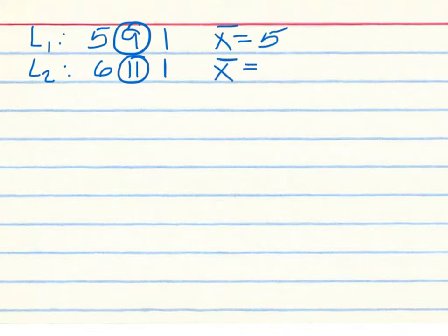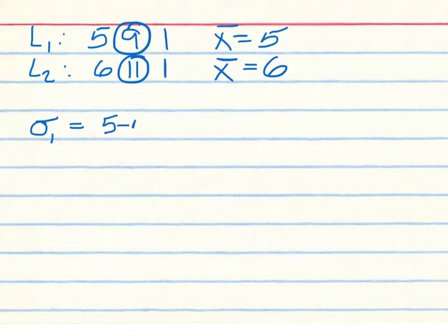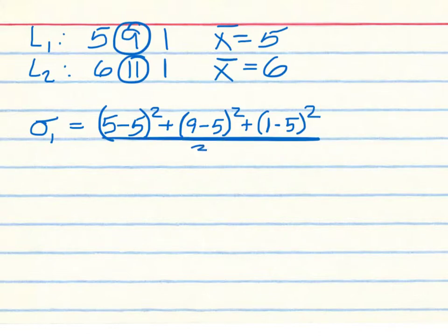The average for List 2 should be 6. Now we want to find the standard deviation for List 1. For the standard deviation of List 1: take 5 minus 5 and square that, then 9 minus 5 and square that.